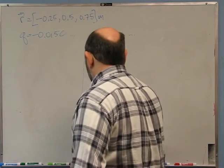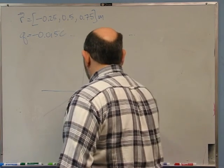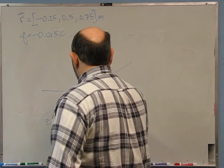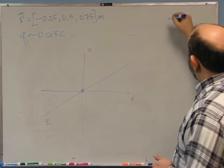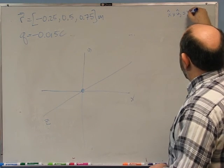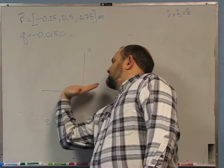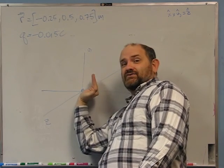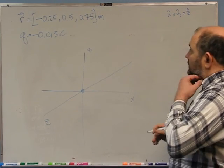I'm going to start by drawing my axes. Here's X, here's Y, and I have to do this in 3D because I've got a Z. I want to make sure my coordinate system is right-handed, which means X̂ cross Ŷ has to equal Ẑ. X̂ points along the X axis; if I curl my fingers from X to Y, Z points out of the board. So we're good.